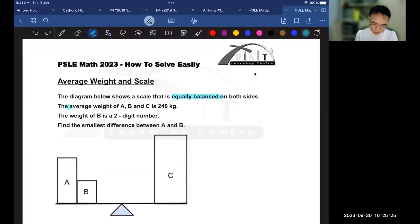The average weight of A, B and C is 240. Before I go on, please take note: this is an average, not a total. Next, they say that the weight of B is a two-digit number. And the question they're asking you to find is the smallest difference between A and B.